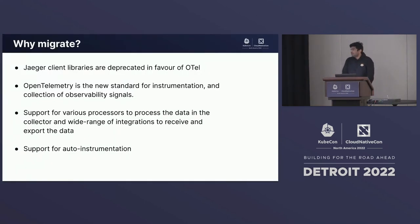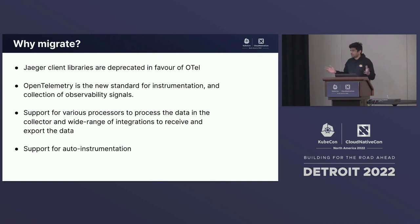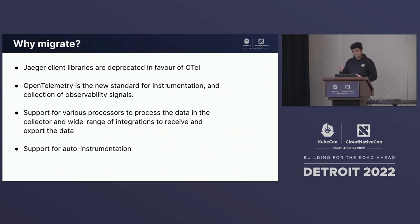Why do you have to migrate? We've been using Jaeger for a while and Jaeger has served really well for most of us. OpenTelemetry was announced in 2019 at KubeCon NA — that's about four years ago in San Diego. Since then the project has matured and is expanding into different observability signals and adding new capabilities. Let's discuss what those capabilities are and why migration would make sense.